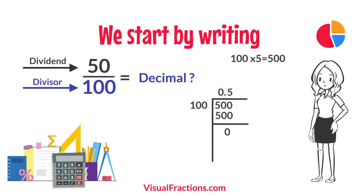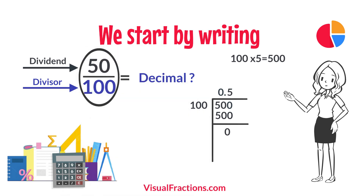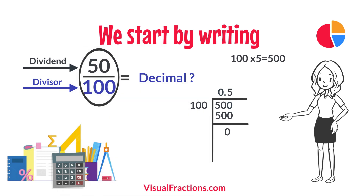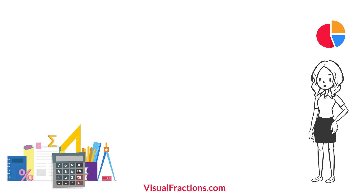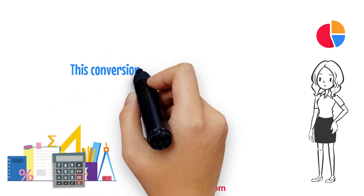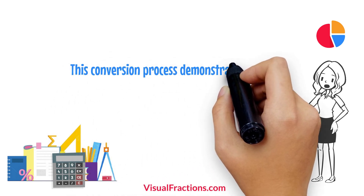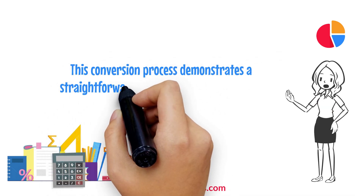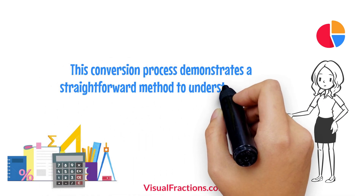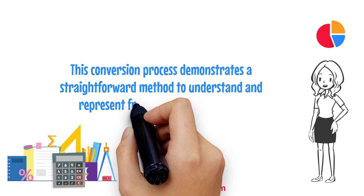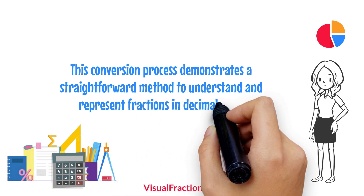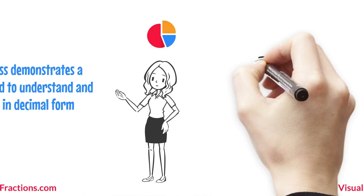So, there we have it. The fraction 50 one hundredths converted to a decimal is 0.5. This conversion process demonstrates a straightforward method to understand and represent fractions in decimal form.